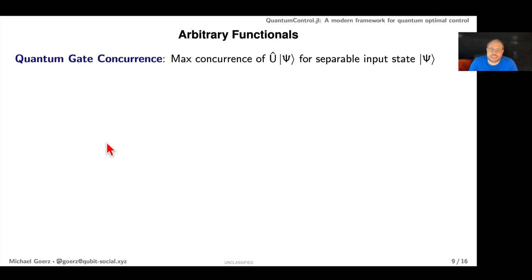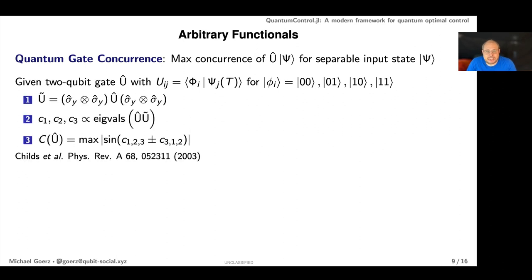For example, in the context of quantum information there's an entanglement measure for quantum gates which is the maximum concurrence that you can get by applying the gate to a separable input state. You give it a two-qubit gate as a four by four matrix, calculate this partially rotated gate, calculate these values C1, C2, and C3 from the eigenvalues, look at all possible combinations in the sine, and take the maximum. To make that into a full functional you also take into account that you might lose population from the logical subspace, so you add a unitarity measure.